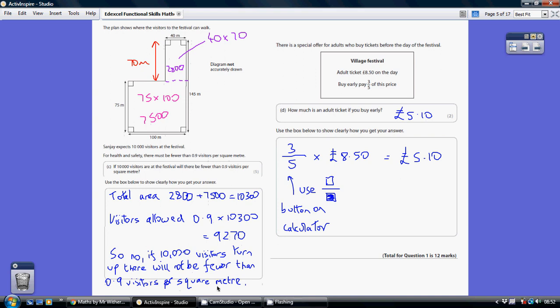Now for part D, adult tickets are £8.50. By early, you pay three fifths of this price. Now, several ways of doing this. You could appreciate that one fifth, you would divide this by five. So three fifths, you would then take that number when you've divided by five and multiply it by three. So £8.50 divided by five times by three equals, and that would give you £5.10.